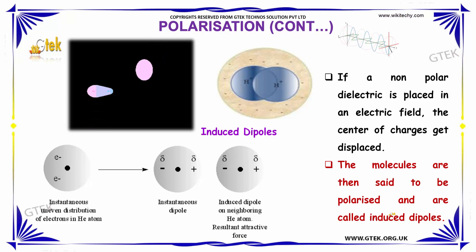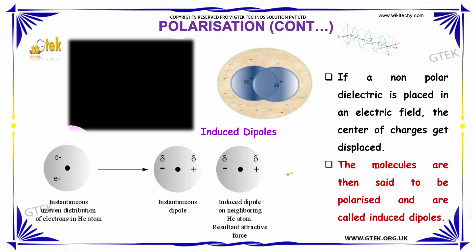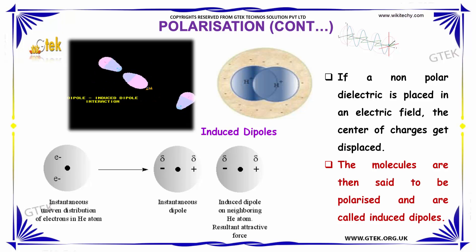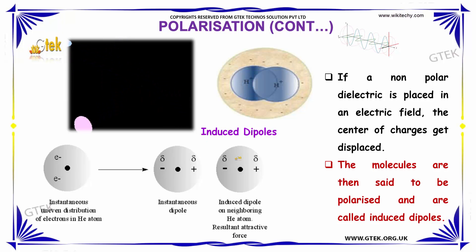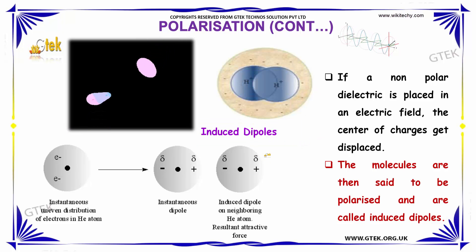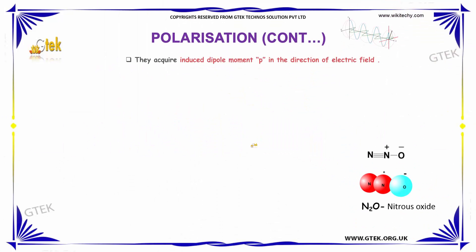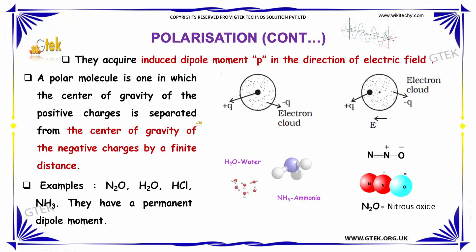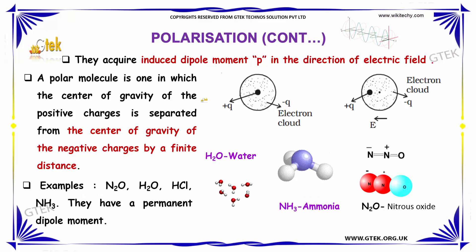If a nonpolar dielectric is placed in an electric field, the center of charges gets displaced. The molecules are then said to be polarized and are called induced dipoles. They acquire an induced dipole moment, indicated as P, in the direction of the electric field.